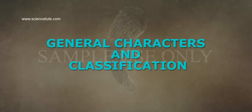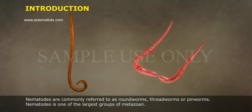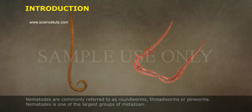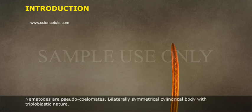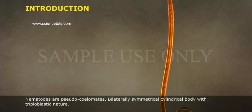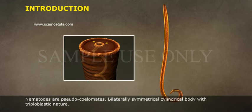Nematodes are commonly referred to as roundworms, thread worms, or pin worms. Nematoda is one of the largest groups of metazoan. Nematodes are pseudocoelomates, bilaterally symmetrical, with a cylindrical body and triploblastic nature.